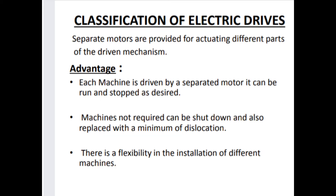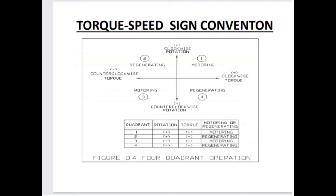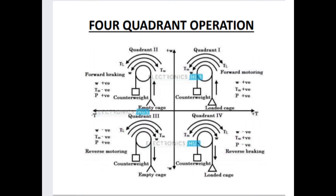Then here we see the torque-speed sign convention. There are four quadrants shown in the diagram of four-quadrant operation. The first quadrant is motoring, the second is regenerating, the third is motoring, and the fourth is regenerating. Here we see the counter-clockwise torque and the clockwise torque. Now we see this more broadly — here see the four-quadrant operation with negative and positive sign convention.